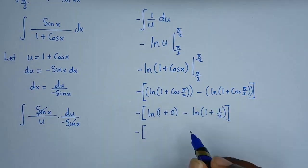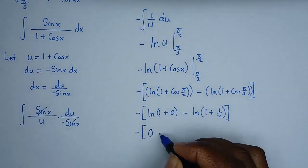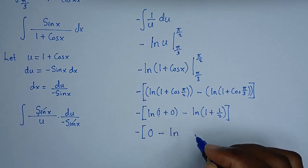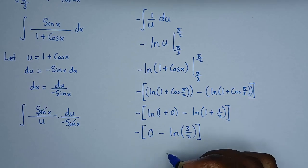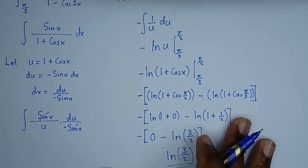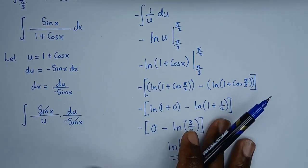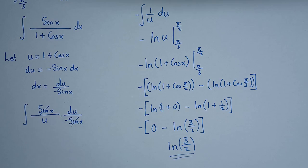Since ln 1 = 0, we have −[0 − ln(3/2)] = ln(3/2). The two negatives give a positive result, so the final answer is ln(3/2). This is exactly what we needed to show. It's important to prove the trig identity first, because once you do, you substitute it in and the integration becomes straightforward using u-substitution.